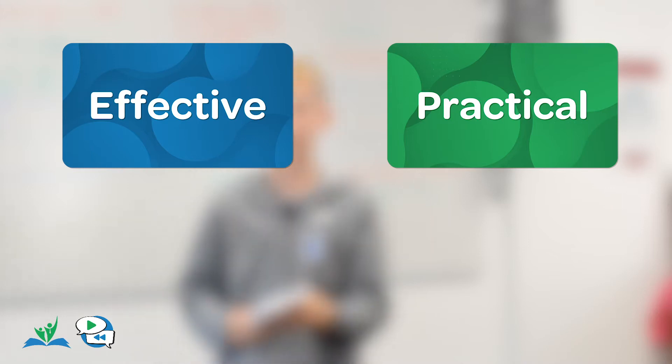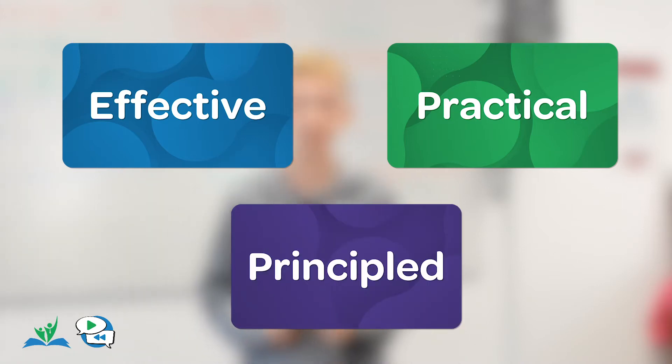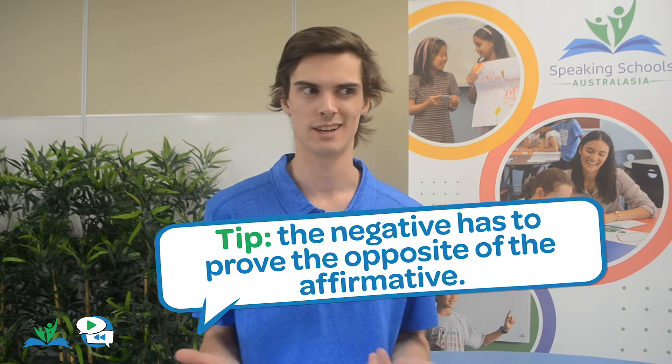And as the negative, it's your job to ensure that the affirmative does not prove them. These are the three burdens that the affirmative team will come across in almost every single debate. They need to prove that their model is effective, meaning it will actually solve the problem that they want it to solve. Practical, meaning that the benefits outweigh the harms. And principally justified, meaning that it's actually the right thing to do. And as the negative, if you can prove that their model isn't effective, practical, or principled, then most of their points become somewhat irrelevant, and you're in a really good place to win the debate.